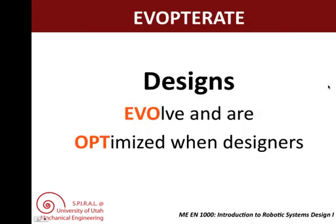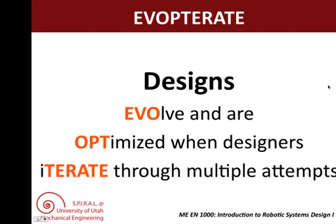Both evolution and optimization lead to new design iterations. Essentially, it's hard to get things right the first time, so multiple attempts result in improved designs. We use both terms because sometimes designs evolve without necessarily getting better. You may have noticed this already in your design project. It is very important to leave sufficient time in your project planning for building and testing prototypes, and then for more redesigning and testing.